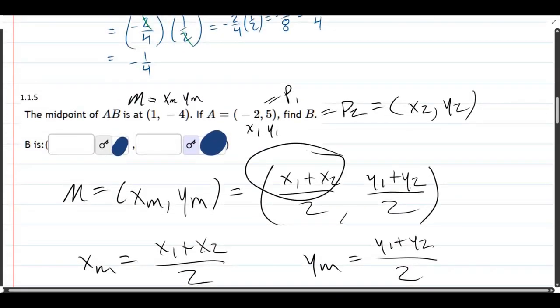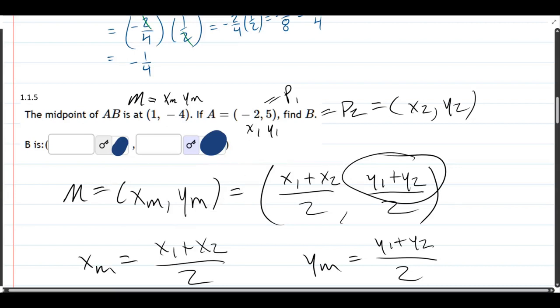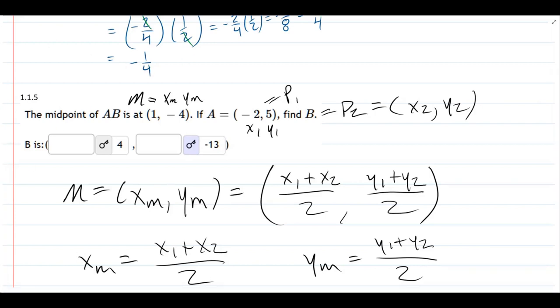Normally you're gonna plug in values right here and then you're gonna find the XY of the midpoint. But this question, the order is a little different. And let's uncover the answer four, negative 13. All right, I hope that helped you out.